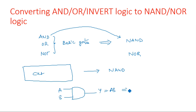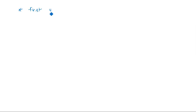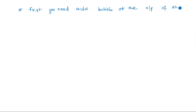You are asked to convert this AND gate into a NAND gate. The first step is to add a bubble — a bubble is nothing but a NOT gate — at the output of the AND gate. This rule applies because an AND gate followed by a bubble gives you NAND operation.